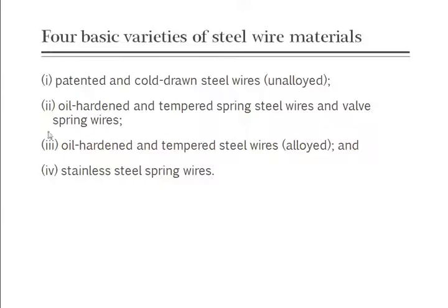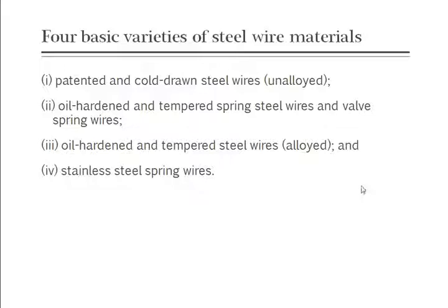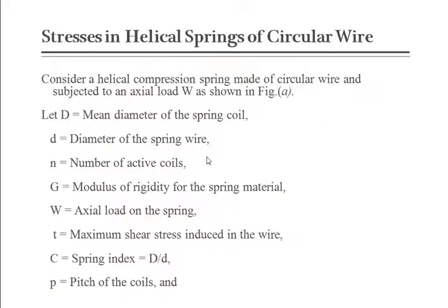The main types of steel used for making springs are: patented and cold-drawn steel wires (unalloyed), which undergo a heat treatment process and are the mainly used steel wires; oil-hardened and tempered steel wires; alloyed stainless steel spring wire. These are the main types used for the manufacture of springs.